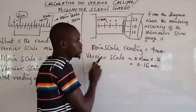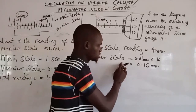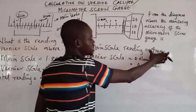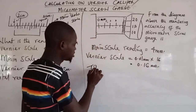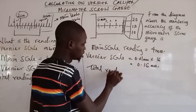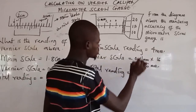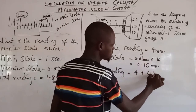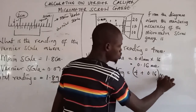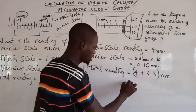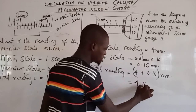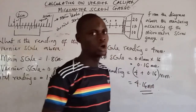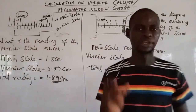After getting the vernier scale reading of 0.16 mm and the main scale reading of 4 mm, you add the two readings together. The total reading equals 4 mm plus 0.16 mm, which gives 4.16 mm. That is the final reading on the micrometer screw gauge.